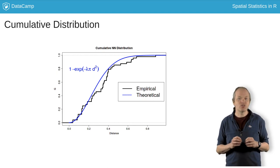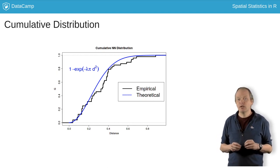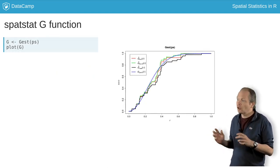Spatstat uses the g est function to estimate G, given a PPP object and an optional distance vector.